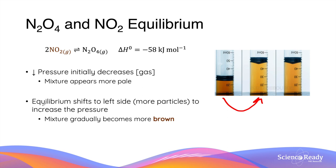However, like before, if you wait for a few more seconds, you will see the color of the mixture becoming slightly more brown. This is because the equilibrium shifts to the left side, which has more particles, in order to increase the pressure of the system. As the equilibrium moves to the left side, the concentration of nitrogen dioxide increases, while that of N2O4 decreases. The increased concentration of NO2 leads to a more brown appearance.